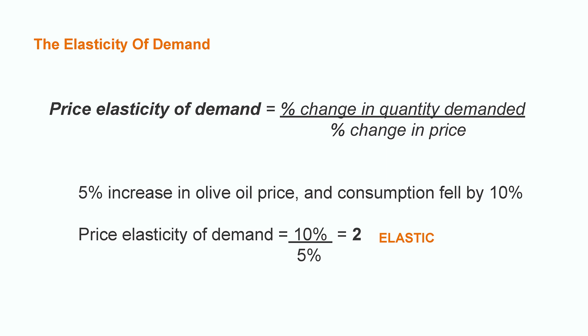For example, suppose there is a 5% increase in the price for olive oil, and as a consequence, the demand for olive oil fell by 10%. In order to calculate the price elasticity, we divide the percentage change in quantity demanded — that is 10% — by the percentage change in price — that is 5%. As a result, we obtain 2. This means that demand for olive oil is elastic because it is higher than 1.